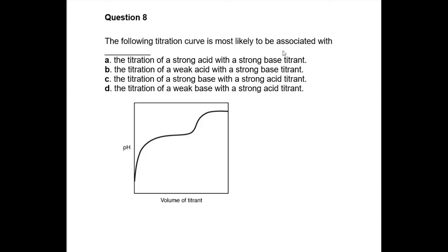Question eight: we need to identify the nature of the titration from the curve. The starting pH looks fairly high, and at the endpoint the pH is changing from somewhere above seven to about 11. The inflection point is above pH 7, which tells us we are dealing with a weak acid–strong base titration. The answer is B.